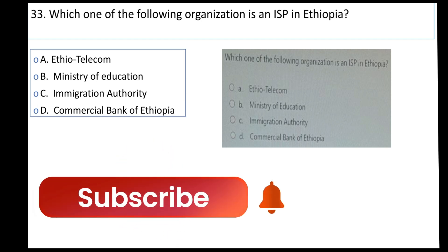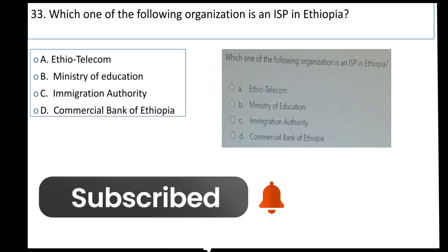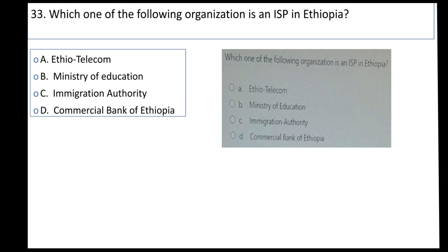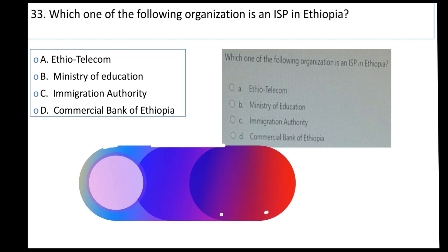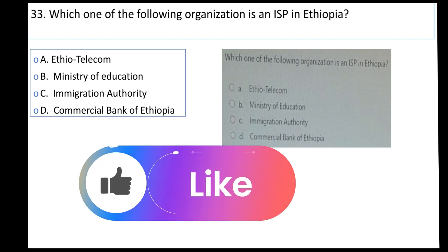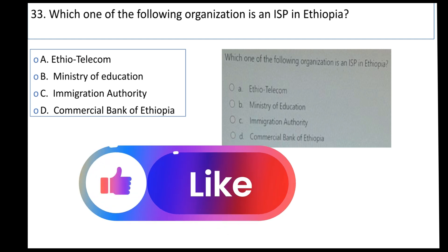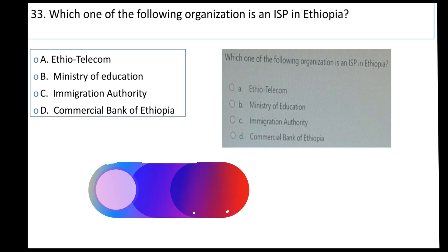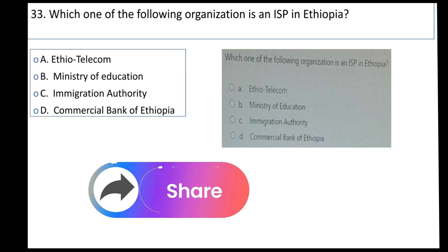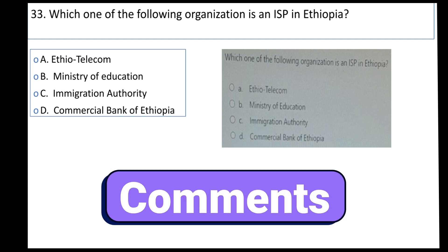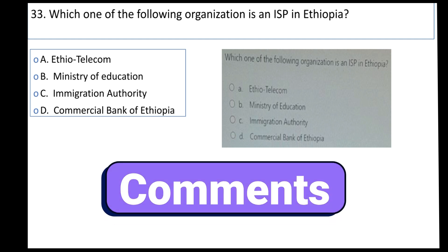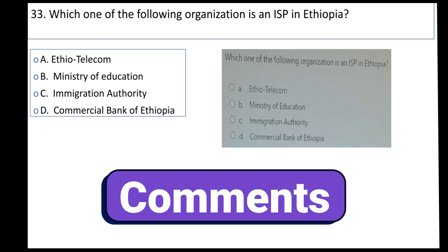Which organization is an ISP in Ethiopia? A: ETHOTELICOM, B: Minister of Education, C: Immigration Authority, D: Commercial Bank of Ethiopia.